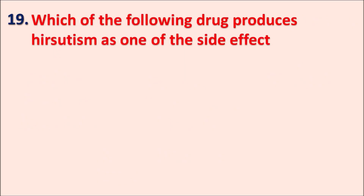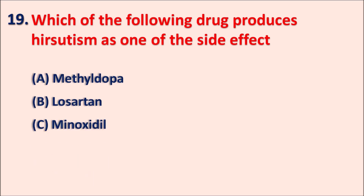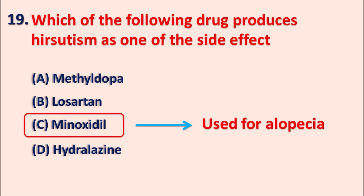Question nineteen: Which of the following drugs produces hirsutism as a side effect? A: methyldopa, B: losartan, C: minoxidil, D: hydralazine. The right answer is C: minoxidil. Minoxidil is a drug which produces unwanted hair growth - this side effect is called hirsutism. Because it promotes hair growth, it can be used in the treatment of alopecia. For baldness, minoxidil can be given by the topical route to promote hair growth.